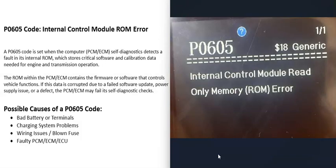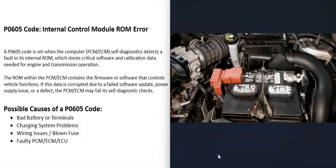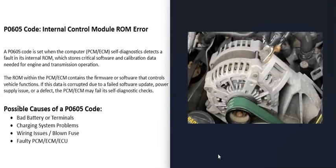The first possible cause of a P0605 code: whenever you have some kind of computer error, go and check the battery. Be sure it's good and that all the terminal connections look good with no corrosion. These computers need a good stable power supply, or that can throw them off and cause errors. Also check the alternator and be sure it's charging correctly, because overcharging or undercharging can also throw these computers off.